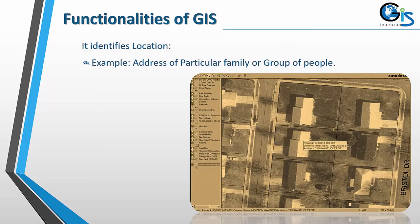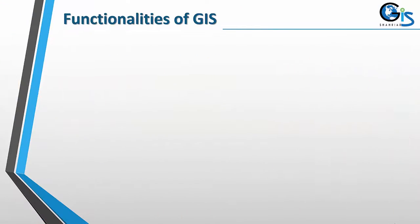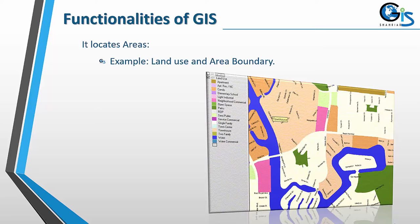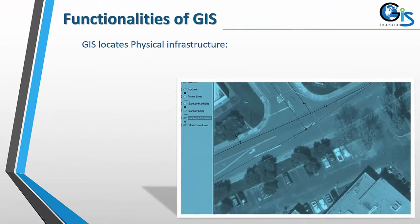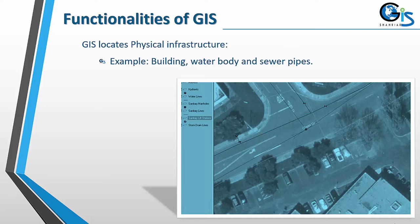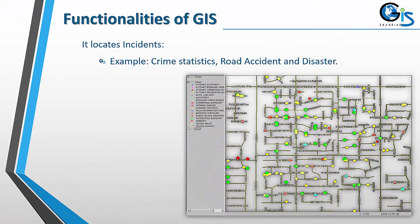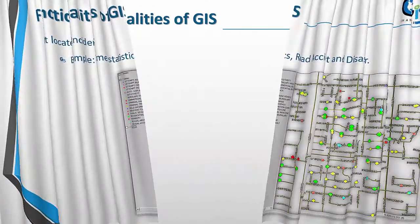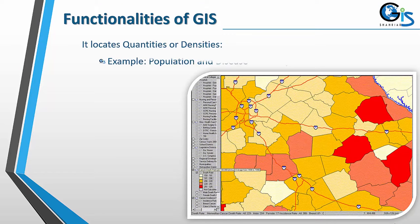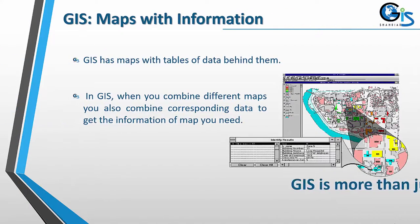GIS identifies location — for example, the address of a particular family or group of people. It locates areas — for example, land use and area boundaries. GIS locates physical infrastructure — for example, buildings, water bodies, and sewer pipes. It locates incidents — for example, crime statistics, road accidents, and disasters. It also locates quantities or densities — for example, population and disease mortality rates.